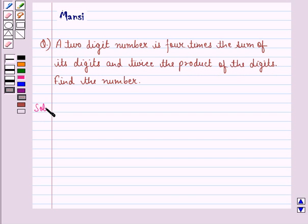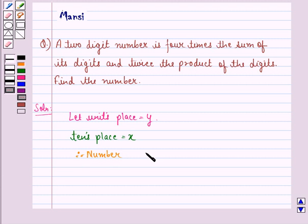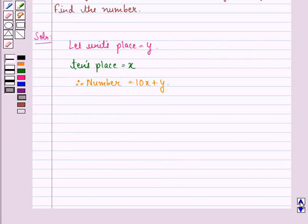Let us see the solution to this question. Let the number at units place be y and at tens place be x. Therefore, the number is 10x plus y. Now, according to the question,